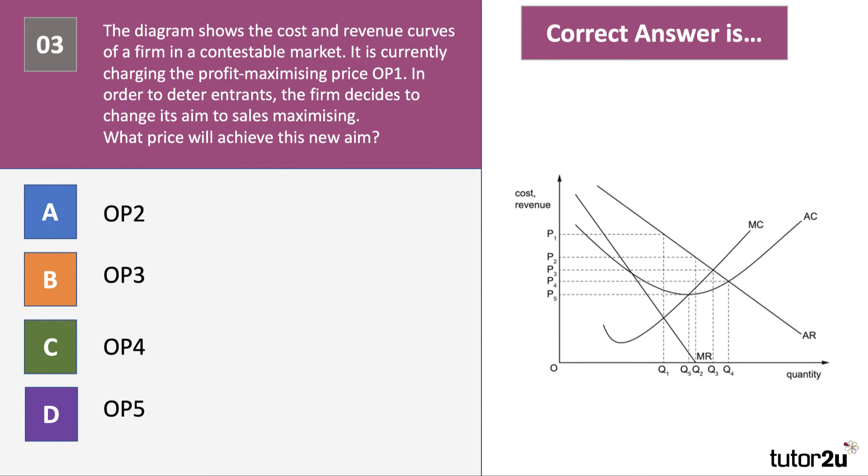Here's question 3, a diagram to work with here. The diagram on the right hand side there shows the cost and revenue curves of a firm in a contestable market. It's currently charging the profit maximising price OP1 at output OQ1. In order to deter entrants, the firm decides to change its aim to sales maximising.